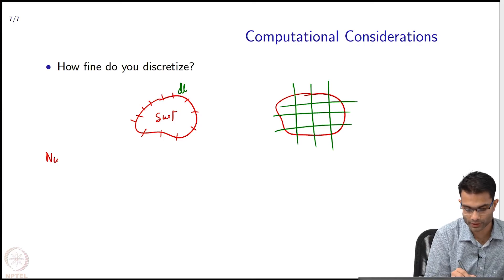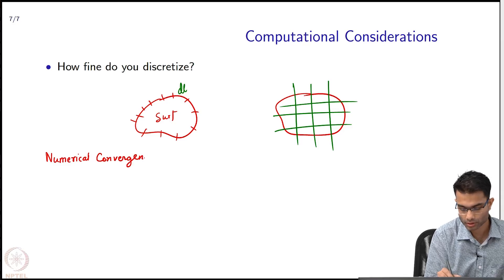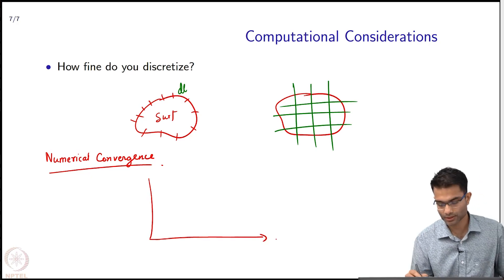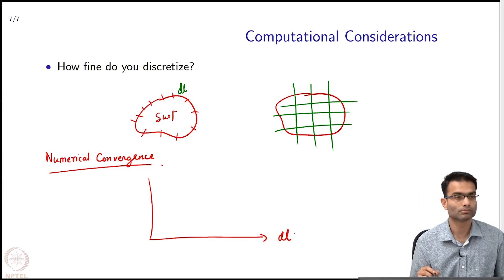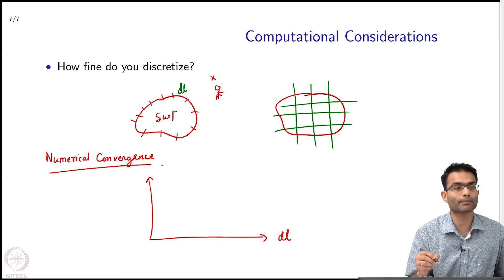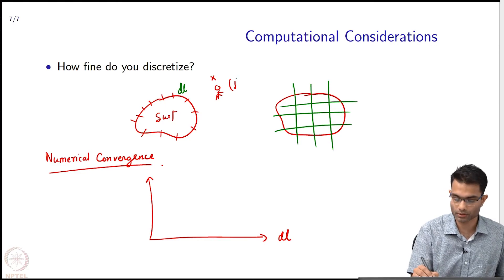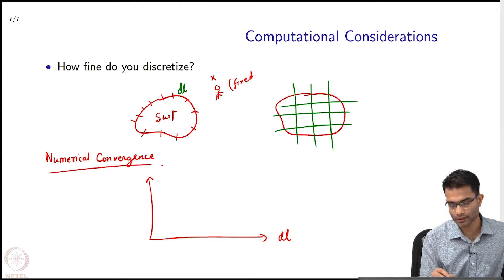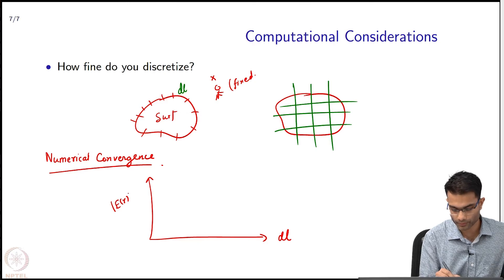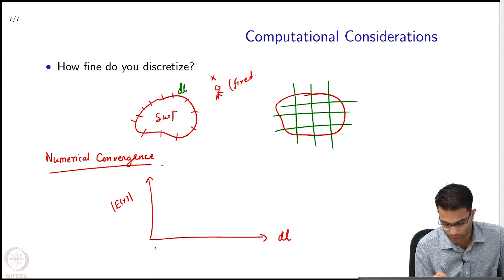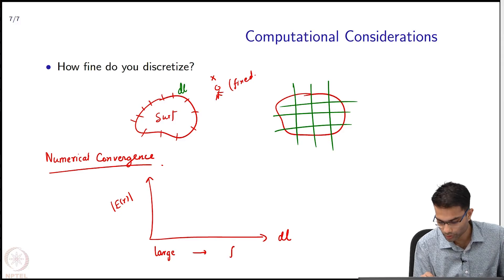That is the idea of numerical convergence, that is the formal word for it. So, what does that say? It says that let's say on this axis I have values of DL, and what do I do? Let me take one position of where I am calculating the field. Keep this fixed and keep changing. So let's say I am plotting E at a received point, keep plotting it. This is starting with large values and going to finer values.